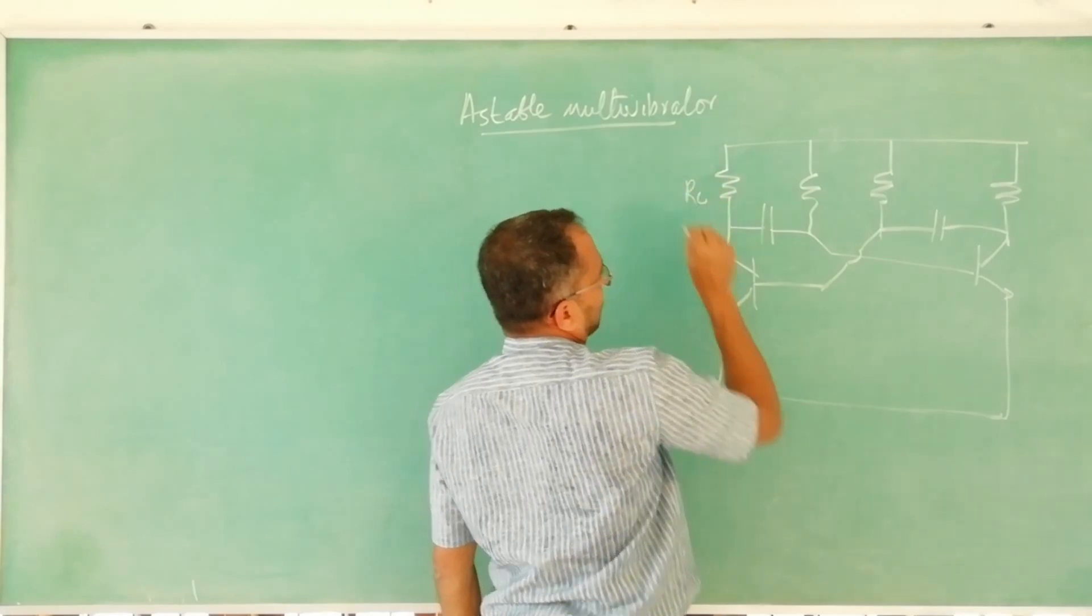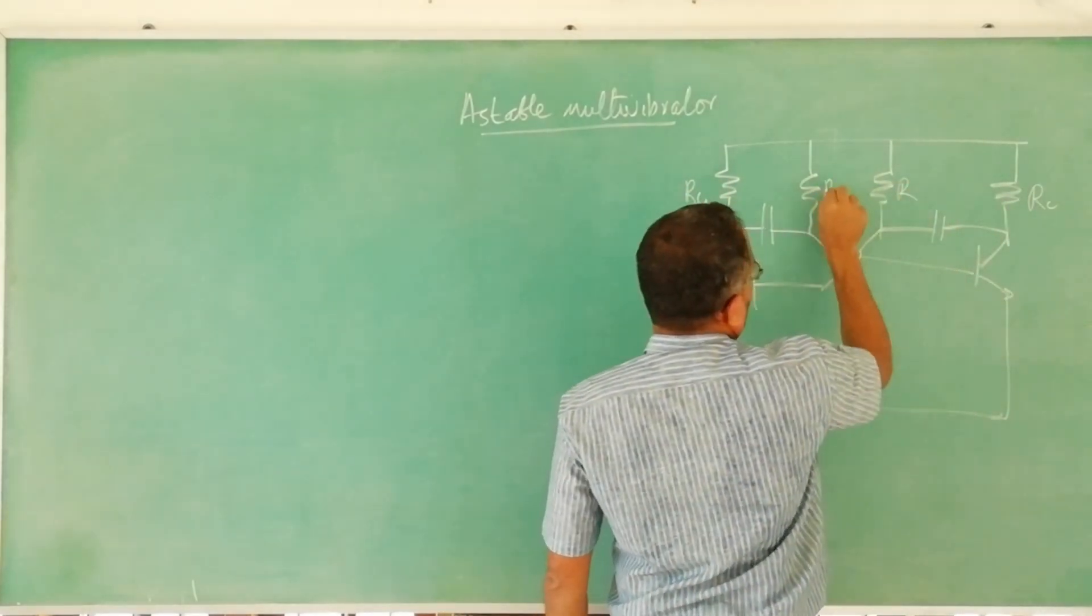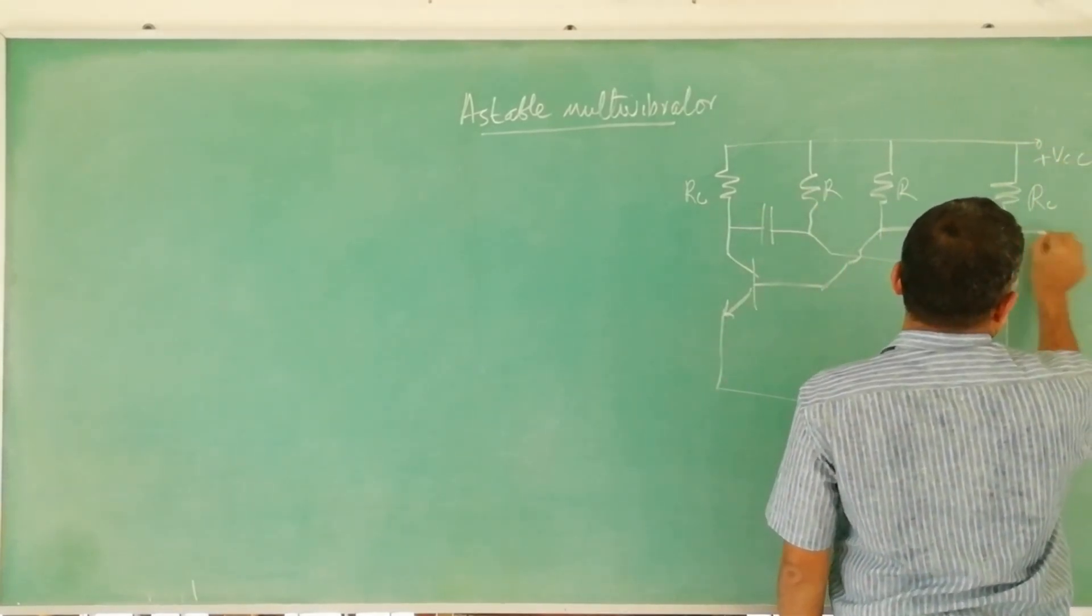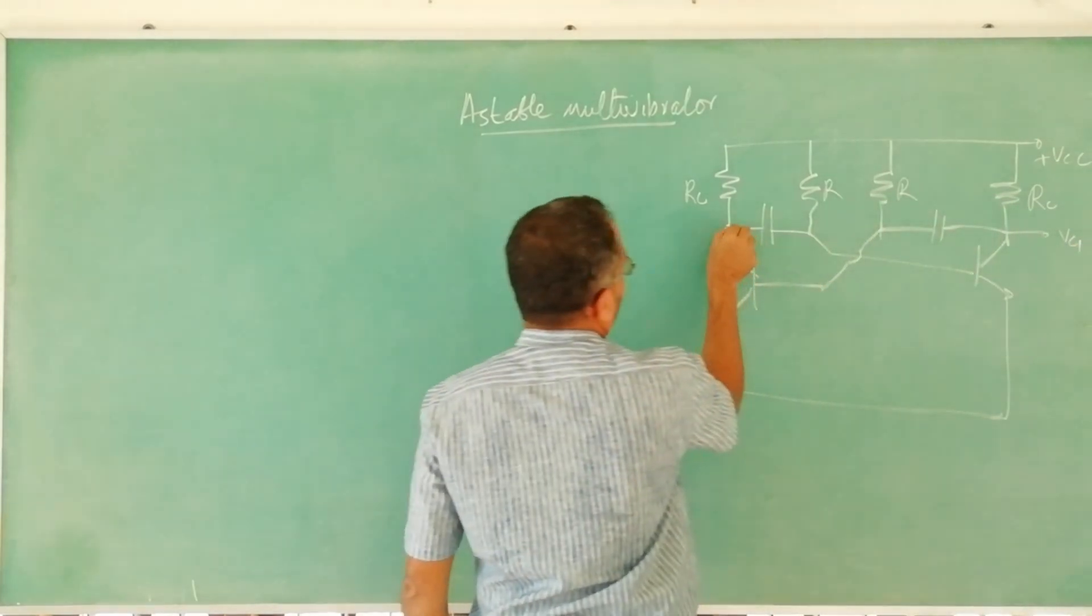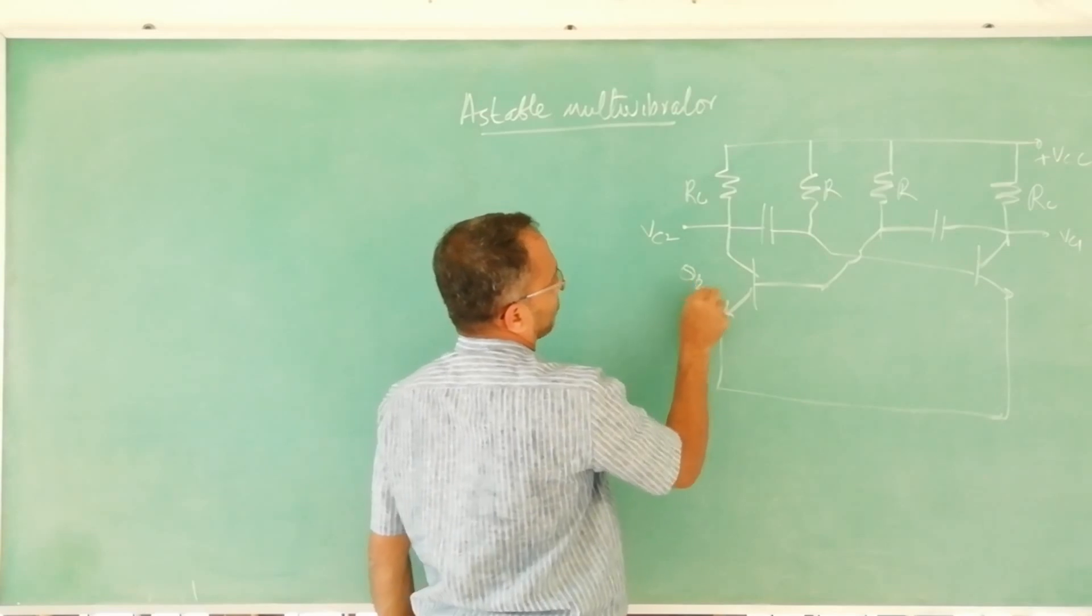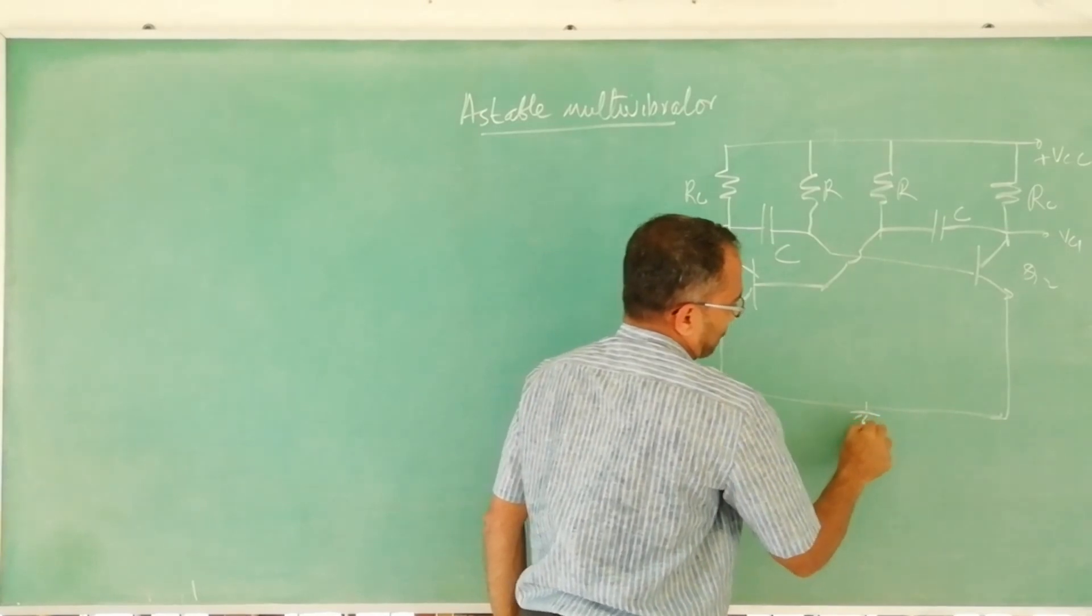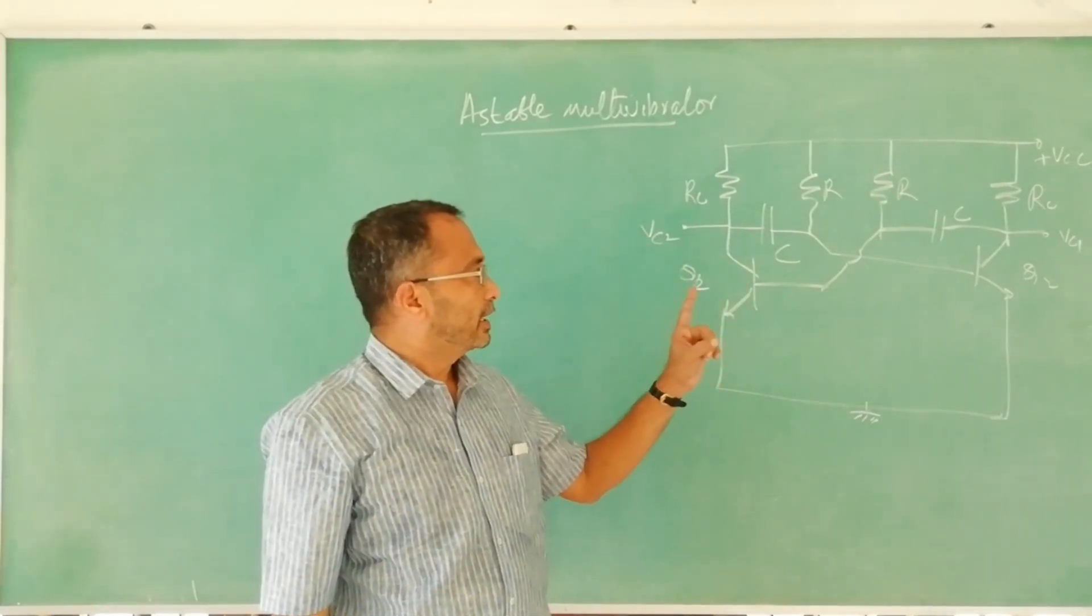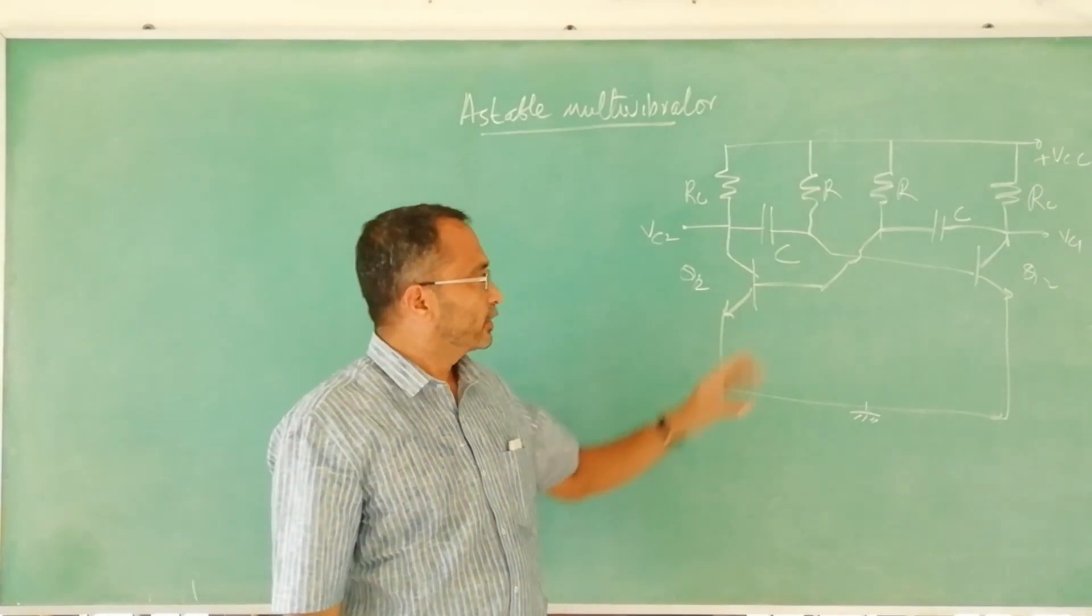RC, RC, R, R, this is plus VCC, this is VC1, this is VC2 from transistor Q2. This is transistor Q1, this is C, this RC couple RC astable multivibrator.